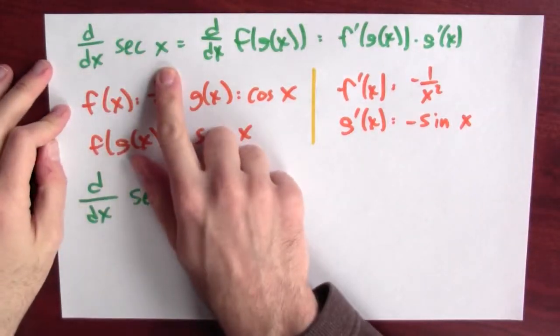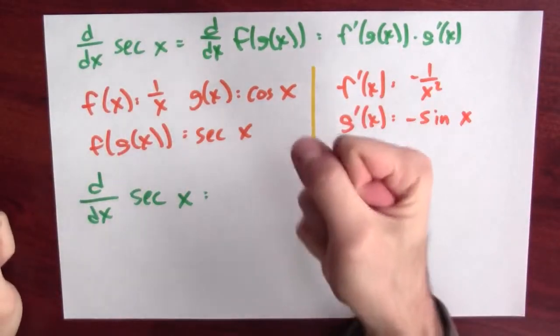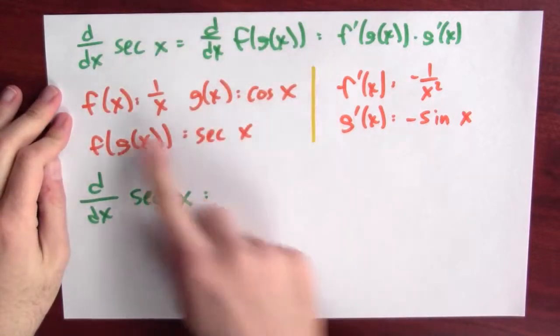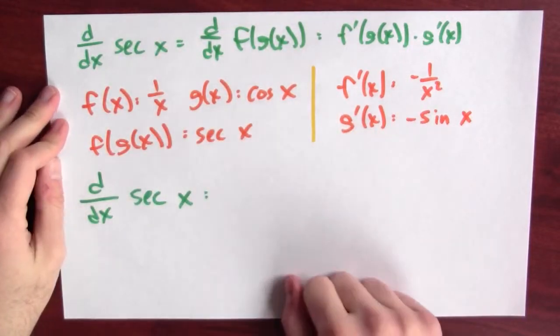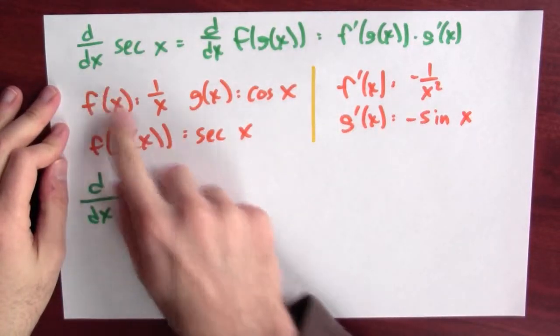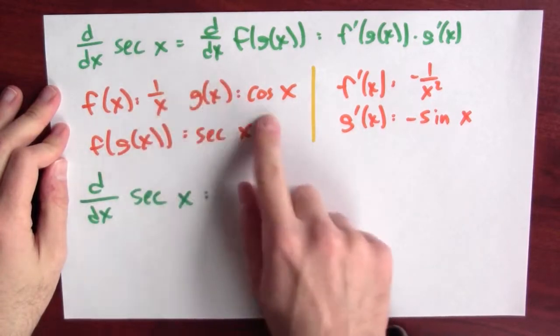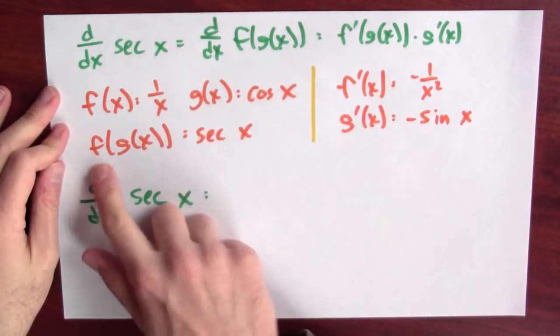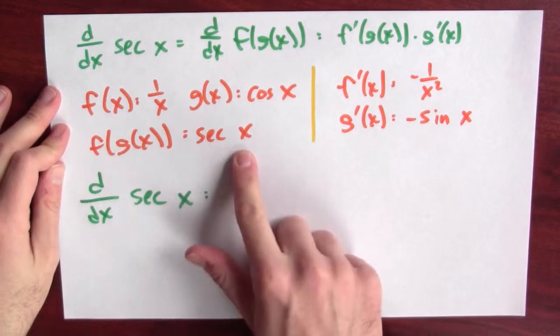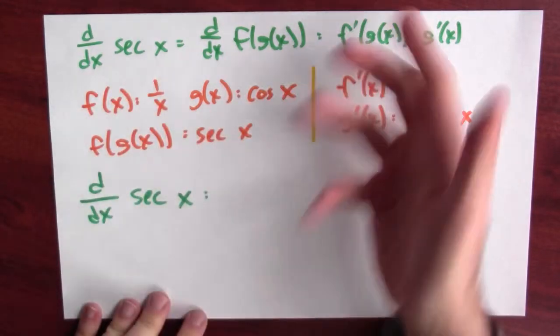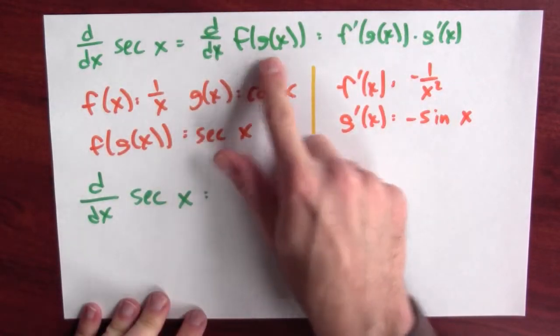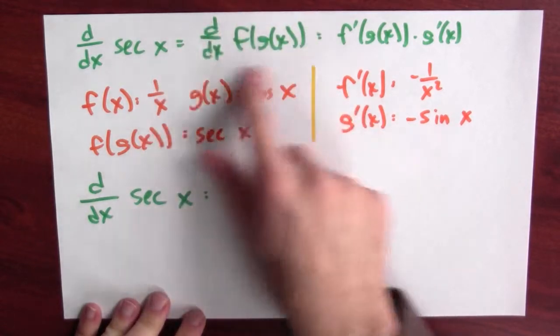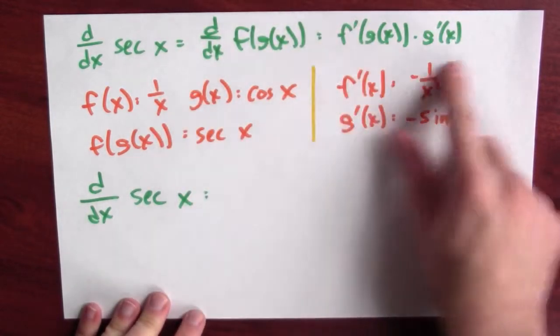We've seen how to differentiate sine, cosine, and tangent, but how do we differentiate secant? One way to get a handle on secant is to write it as a composition of two different functions. If we set f(x) = 1/x and g(x) = cos(x), then f(g(x)) = sec(x). So to differentiate secant, it's enough to differentiate f(g(x)), which we can do using the chain rule.